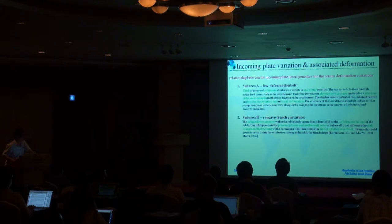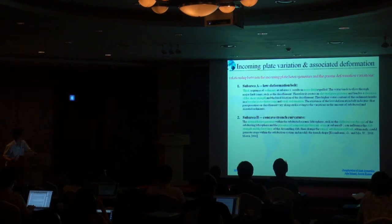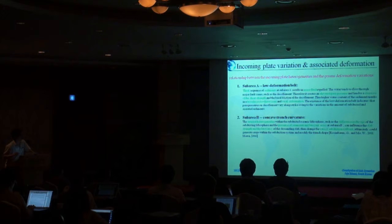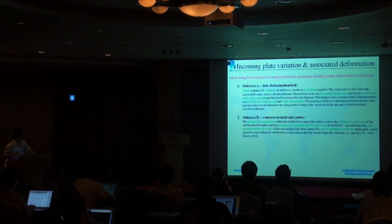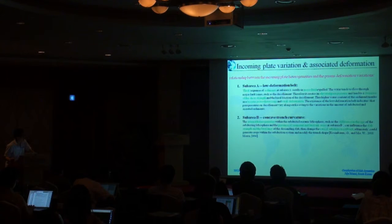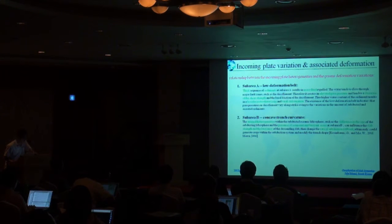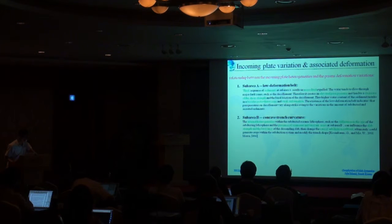The factors influencing deformation vary in different subduction zones. Using the newly acquired multi-beam data and the reprocessed seismic profile, we can look into the relationship between incoming plate heterogeneity and prism deformation variations. First, at the north part, the low deformation is because of the thick sequence of sediment at this area without any pore fluid help, and the fluid tends to flow through the major fault zones.